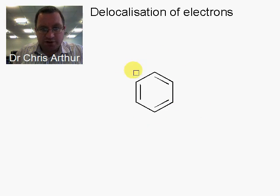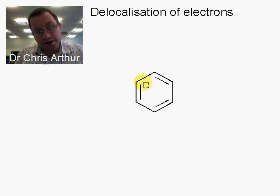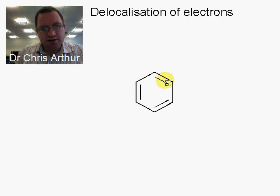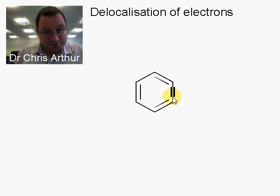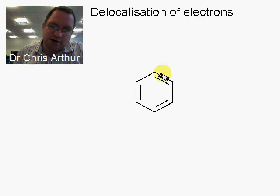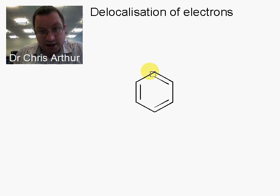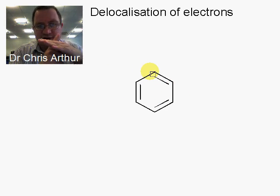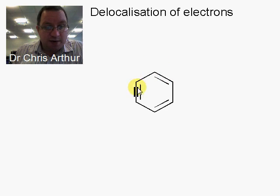You've met this compound before. This is benzene, and we draw it as a 6-membered ring with alternating single and double bonds. All the carbon atoms in this molecule are sp2 hybridized, which means that they have a p orbital sticking up at every carbon, and these p orbitals are used to make a pi bond between adjacent carbons.